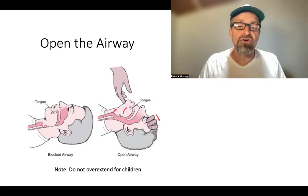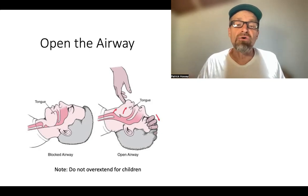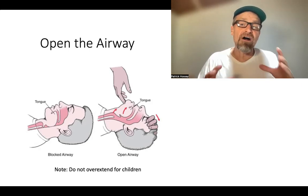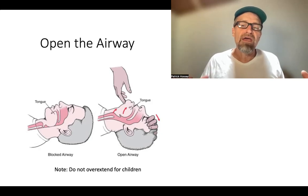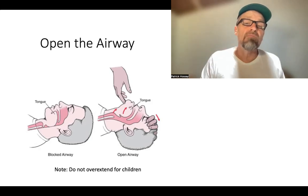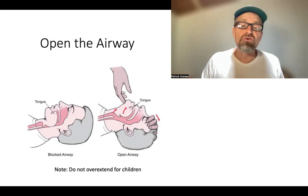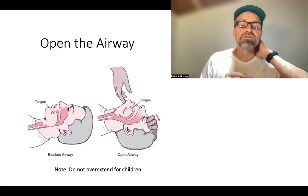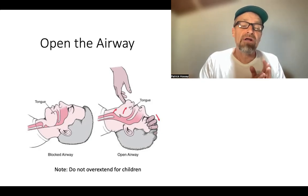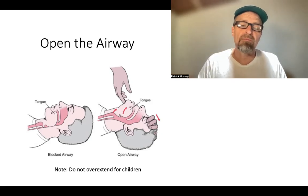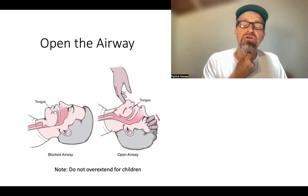Children don't have the same airway geometry as adults. Children tend to have a much larger, floppy epiglottis and a tongue that is larger as a portion of their overall mouth. As a result, if you tilt their head back, you may actually cause more of a blockage. What you want to do is not tilt their head all the way back — maybe just slightly or into a neutral position — to ensure they have an open airway. No overextension for children, but extension for adults.